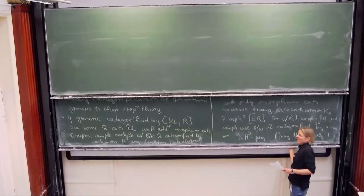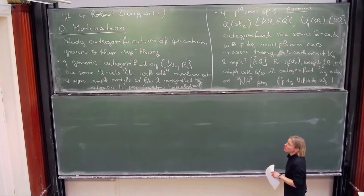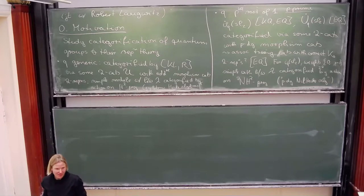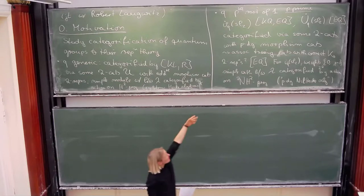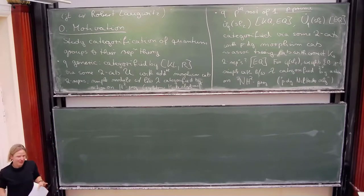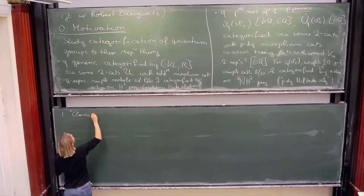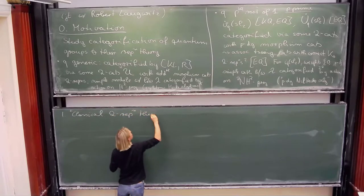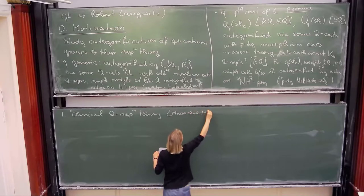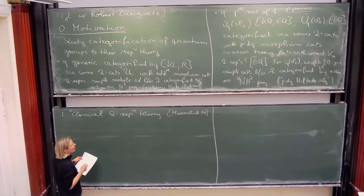So this is the motivation. When these first two-categories were studied — the additive ones, the two-category of Soergel bimodules and so on — motivated by that, Mazorchuk and I decided we wanted some abstract two-representation theory. Similarly, Robert and I decided we wanted some abstract PDG two-representation theory. But before I get to PDG two-representation theory, let me remind you of some classical two-representation theory. This is mainly joint work with Mazorchuk, and in the end I will mention something that involves Soergel bimodules as well.